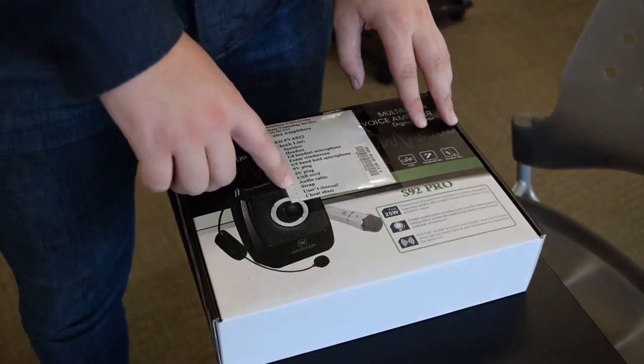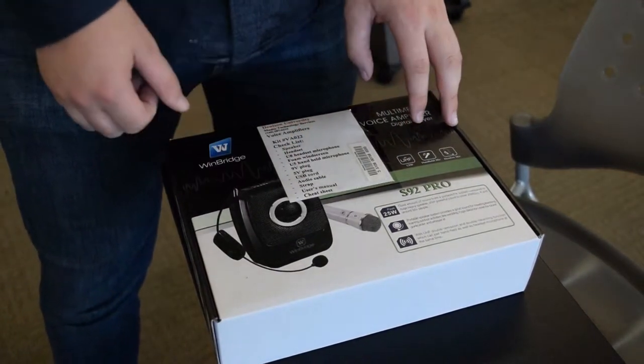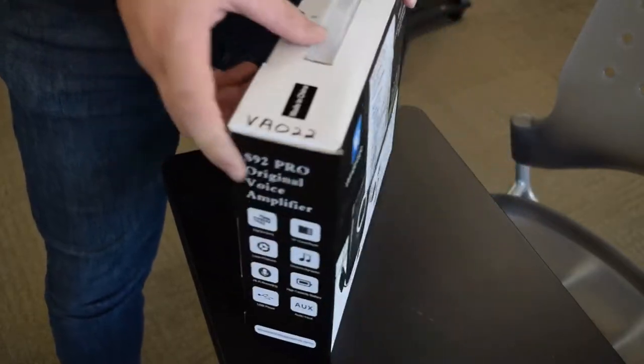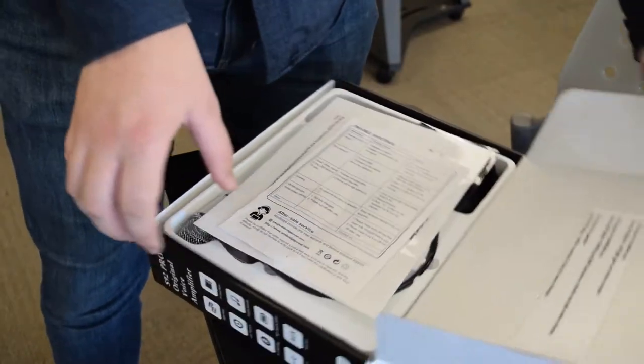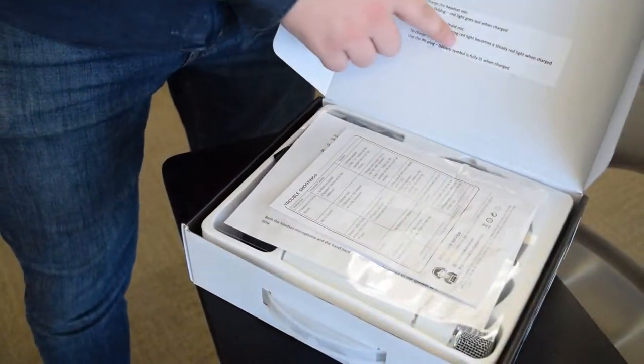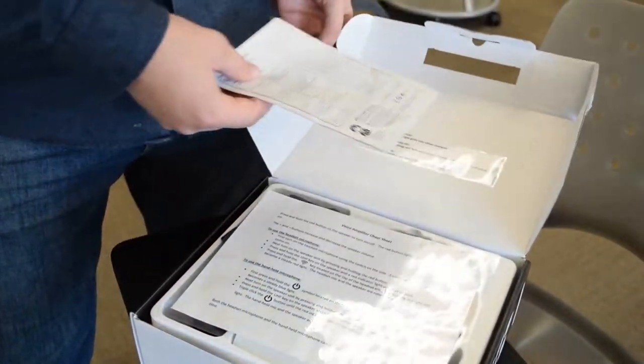On the front of the box we have an itemized list of everything that comes with the kit. When you open the kit you'll find everything inside as well as a set of instructions.